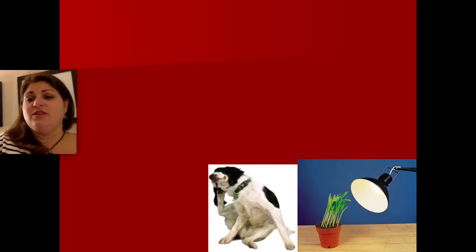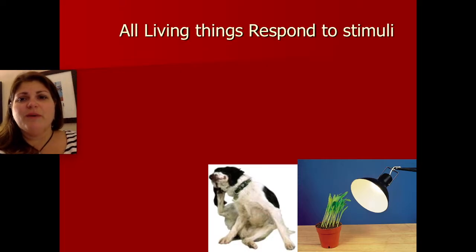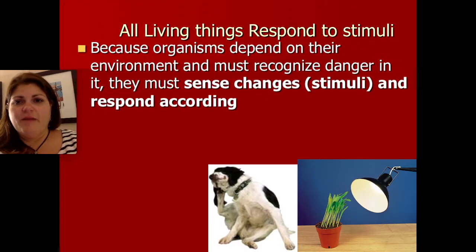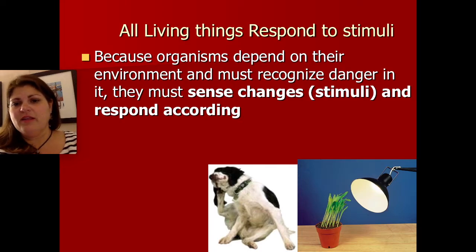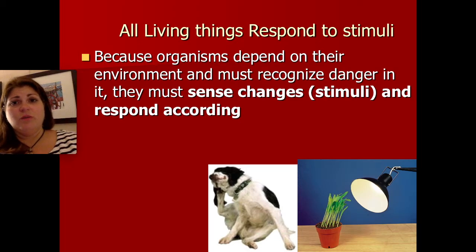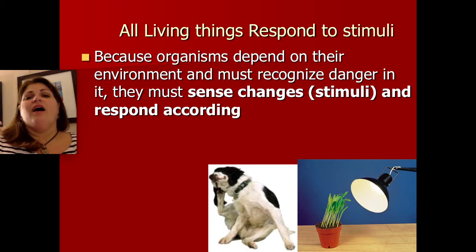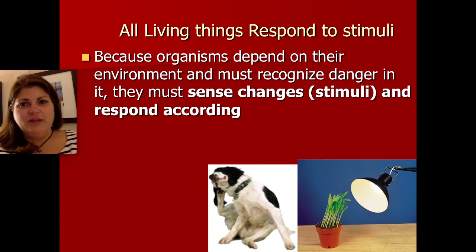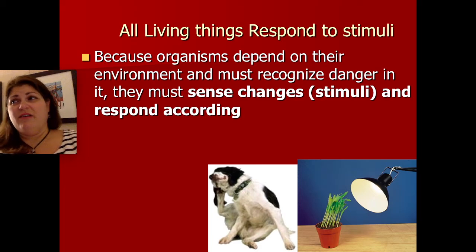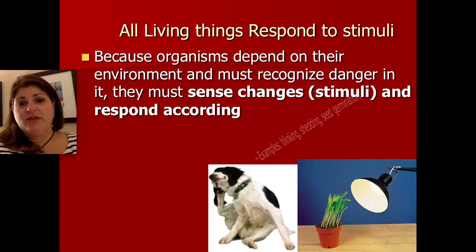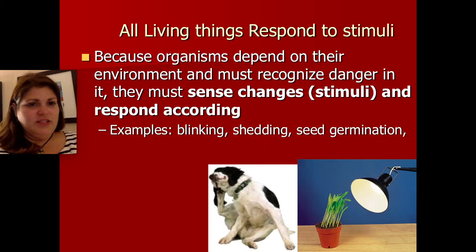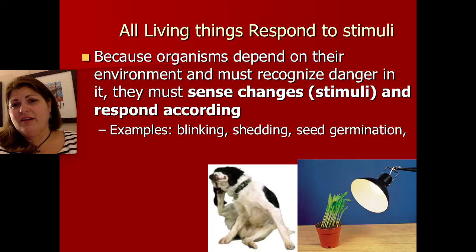The next characteristic of life — which you can see the dog and the plant are both doing — is responding to stimuli. Organisms depend upon their environment, so it's really important that they're able to sense changes in the environment and respond accordingly. The plant is growing towards the light because the light gives it energy. A dog would have to respond to an itch because that itch might be something that could endanger it — an insect that could bite it and spread disease or infection. Blinking, shedding, and seed germination are all initiated by stimuli.